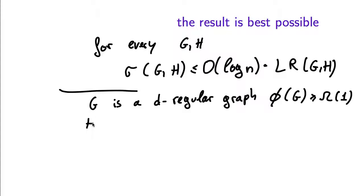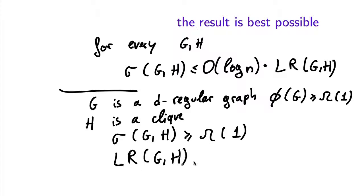Now suppose that H is a clique. Then sigma GH is also an absolute constant because this will be the same as the sparsity of G, which after a factor of 2 is the same as the expansion of G. But I want to argue that the optimum of the Leighton-Rao relaxation is actually at most order of 1 over log n. So this relationship between sparsest cut and Leighton-Rao relaxation is best possible up to the constant that multiplies the log n.